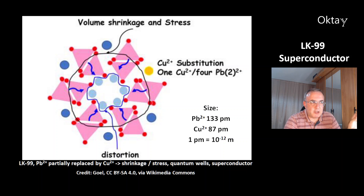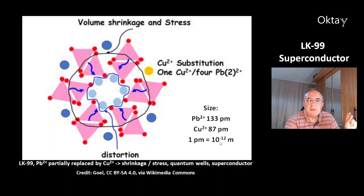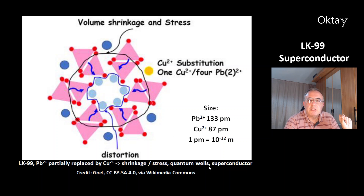This is how it works. Lead ions are partially replaced by copper ions, causing a shrinkage. Copper ions have a size of 87 picometers, which is smaller than lead ions at 133 picometers — one picometer is 10 to the minus 12 meters. This partial substitution causes stress and volume shrinkage in the material, which produces quantum wells and gives this material its superconducting properties.